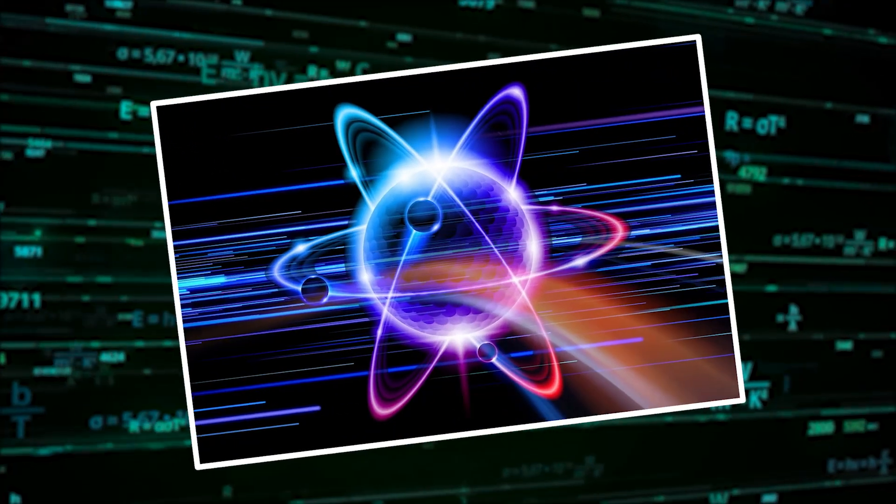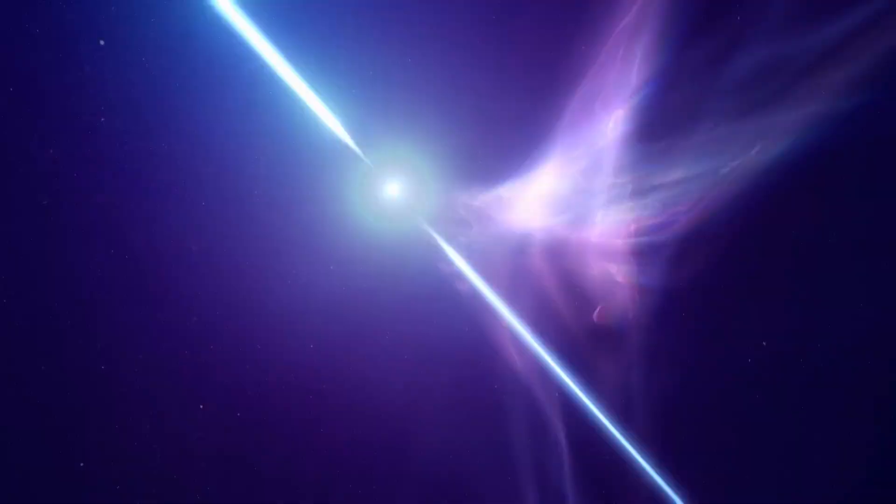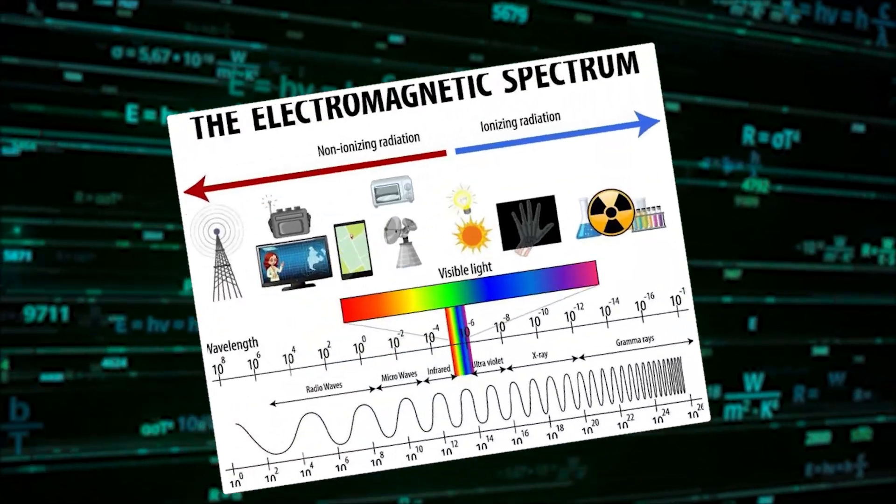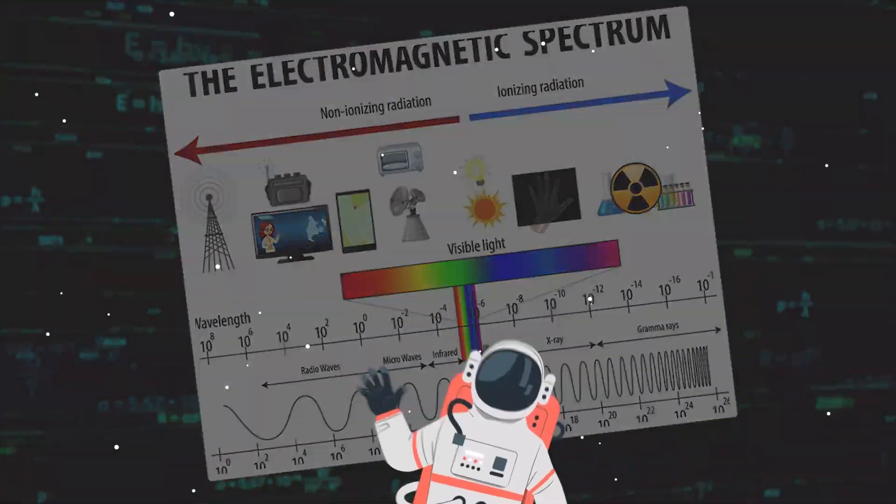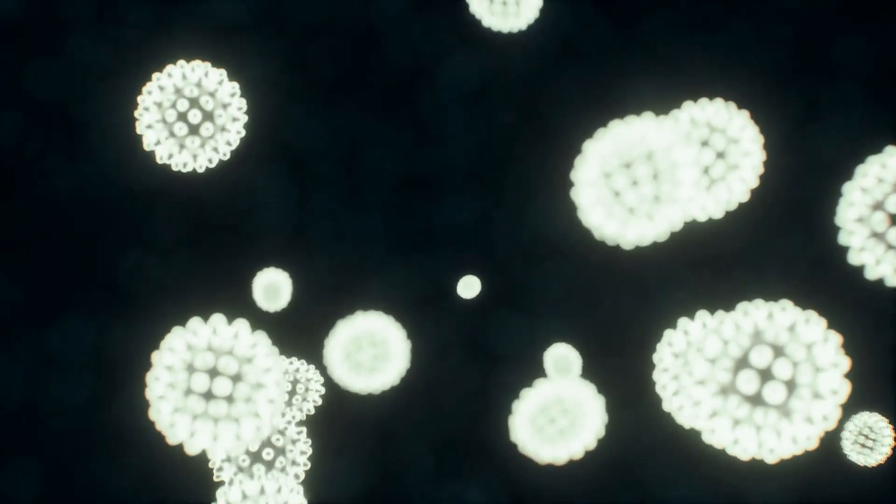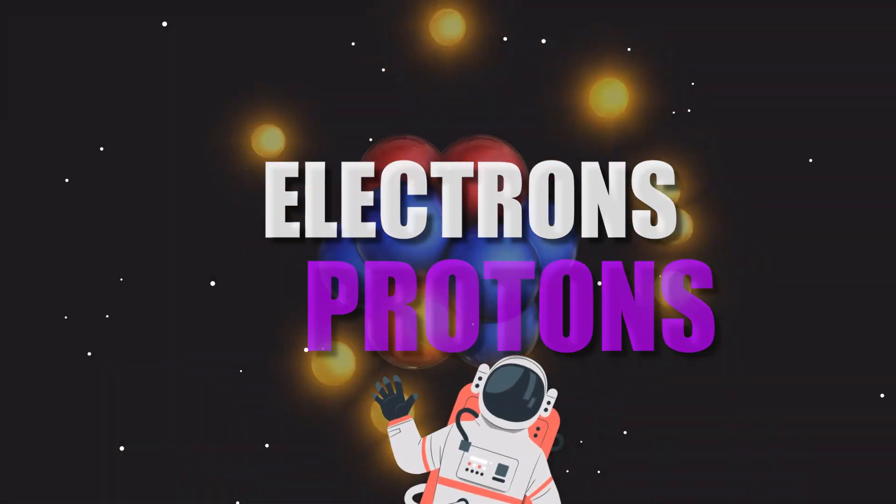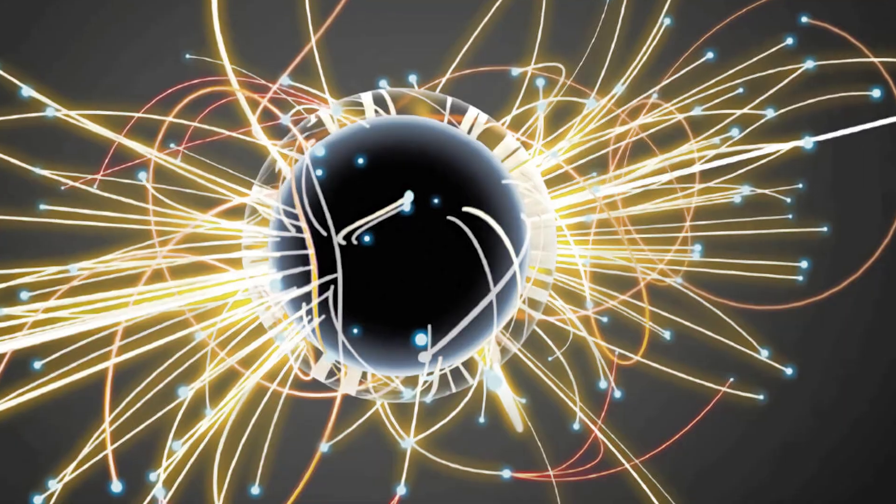A photon is a quantum of light, representing the smallest discrete amount or particle of electromagnetic radiation. Unlike particles that have mass, such as electrons or protons, photons are massless. This absence of rest mass is critical in defining their behavior and properties.